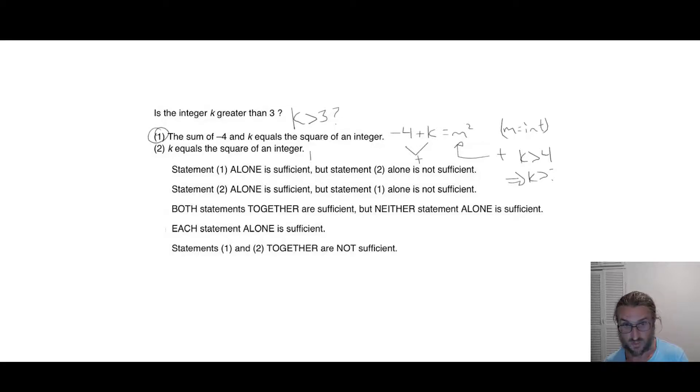Now, k equals the square of an integer, so essentially we're saying k equals m squared. That doesn't really tell us anything because k equals the square of an integer. In that case, k could be 0, k could be 1, there's any number of things it could be.